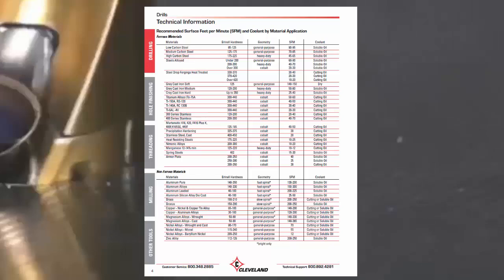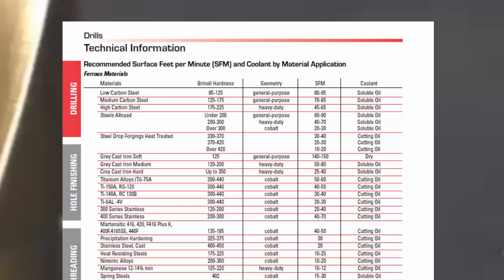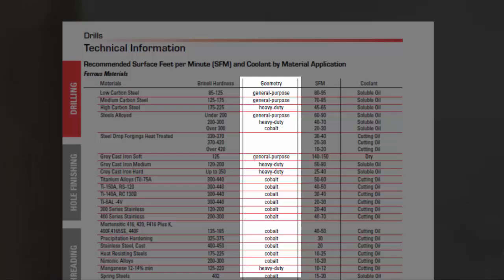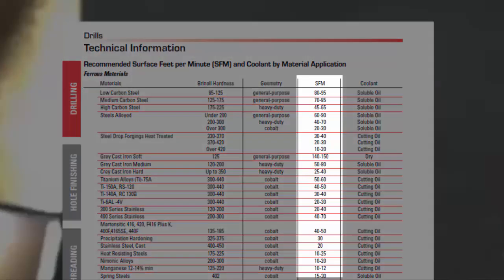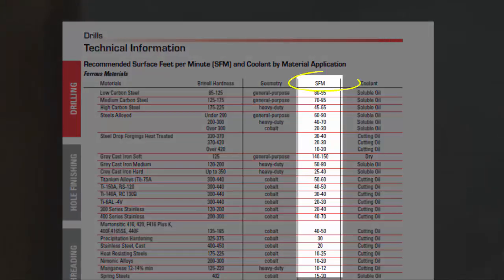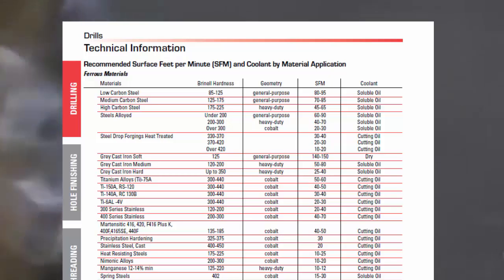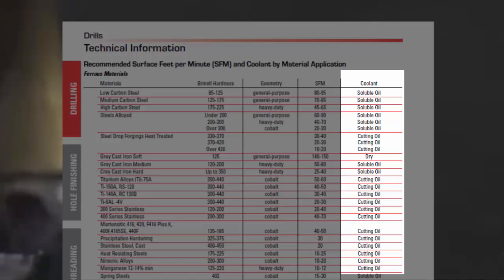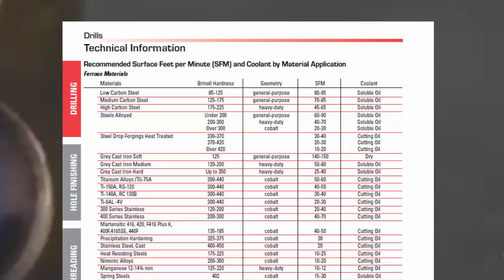This second page has more specific cutting data for drilling. On the left are various types of materials commonly machined. The next column has to do with suggested tool geometry and makeup. This column contains cutting speed — note that the values here are in surface feet per minute and not spindle RPM. Finally, this column on the far right contains the suggested cutting fluids to be used. Many materials can be successfully machined using soluble oil, but some require special cutting oils.